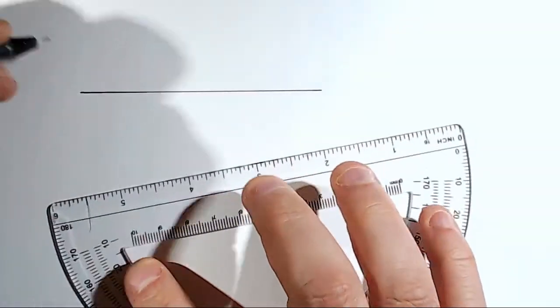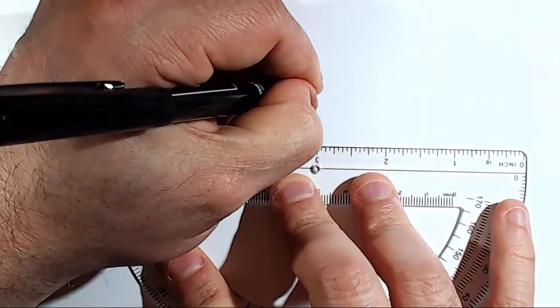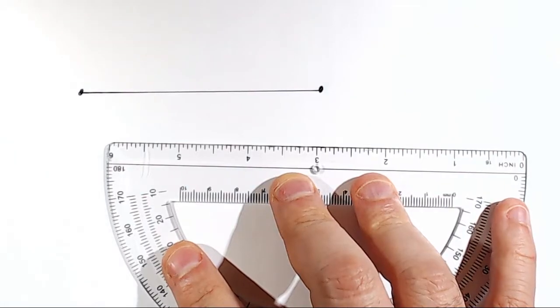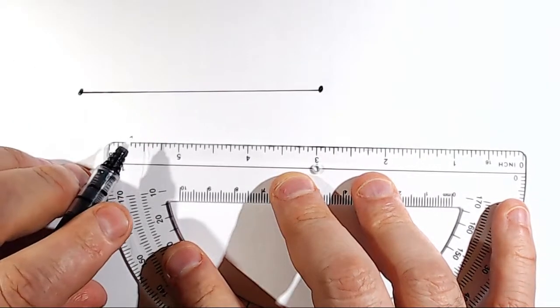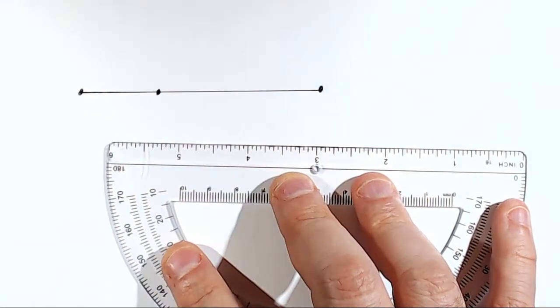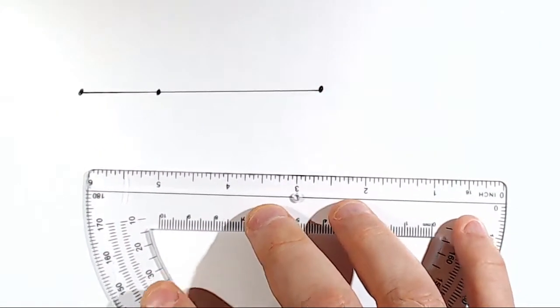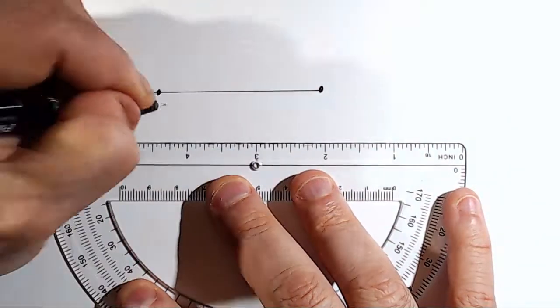If you don't already have some kind of straight edge, I'm using a protractor, but a ruler would work, a credit card, anything that's straight. You need to draw a picture. If you're not drawing a picture, then you're only an audience member. And remember, math is not a spectator sport. So you've actually got to participate.